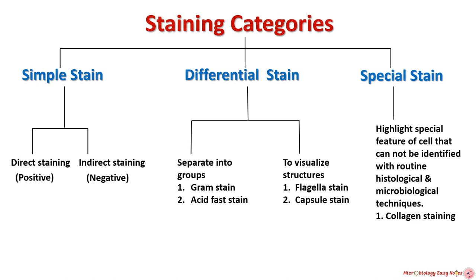Acid-fast stain differentiates between acid-fast and non-acid-fast bacteria. The second category helps to visualize the structure of bacteria, like flagella and capsule. The third category is special staining, which highlights special features of cells that cannot be identified with routine histological and microbiological techniques. In this video, our focus will be on gram staining, which is a differential staining procedure that distinguishes organisms based on their staining properties.